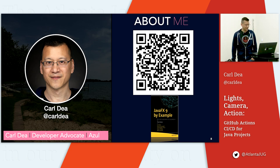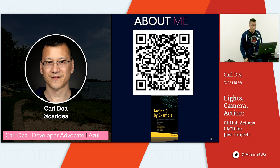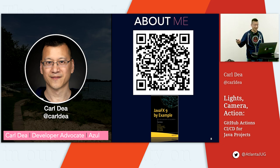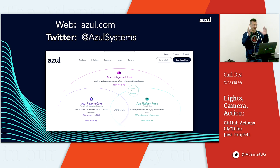My name's Carl D. I'm from Azul Systems. I'm a developer advocate. There's my QR code — it goes to foojay.io where I blog a lot. I'm also a JavaFX fan — it's a UI toolkit. I work for Azul, and a quick plug: we sponsored this event for the food and everything, so buy our stuff.